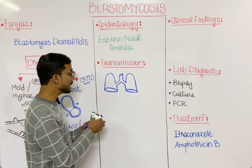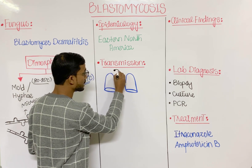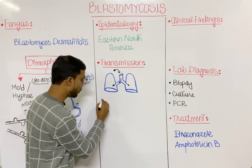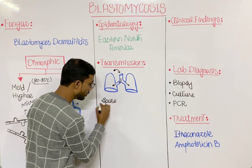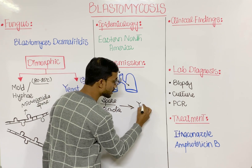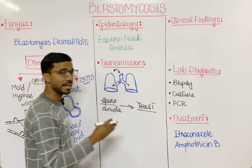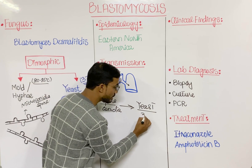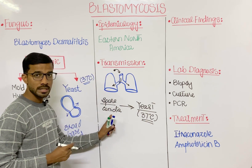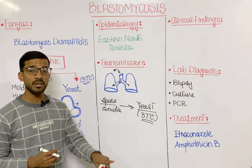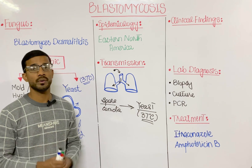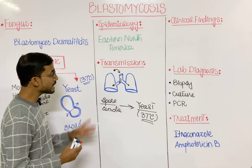When someone inhales the spores of Blastomyces, those spores enter into the lungs. Inside the lungs, the spores or conidia convert into the yeast form, because yeast grows at 37 degrees Celsius — the body temperature. Outside the body, the fungus exists in the mold or hyphae form.